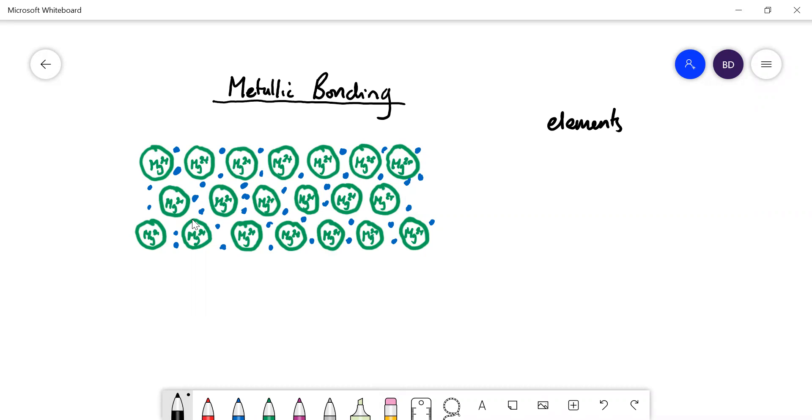Right, so metals—definition in chemistry: a metal is an atom that forms positive ions. It wants to lose electrons. For example, sodium is 2,8,1, magnesium is 2,8,2 electronic structure.